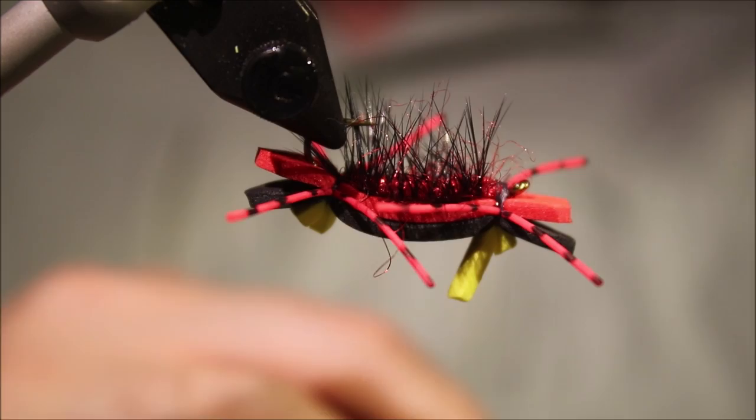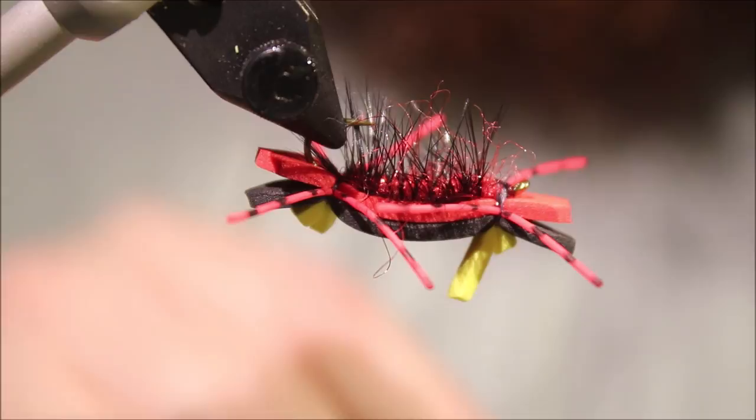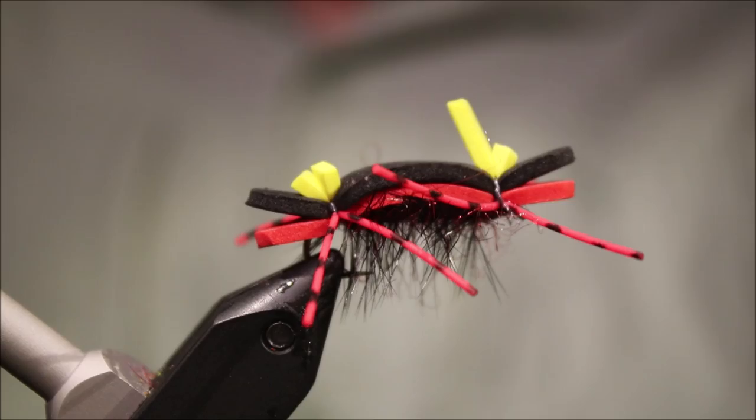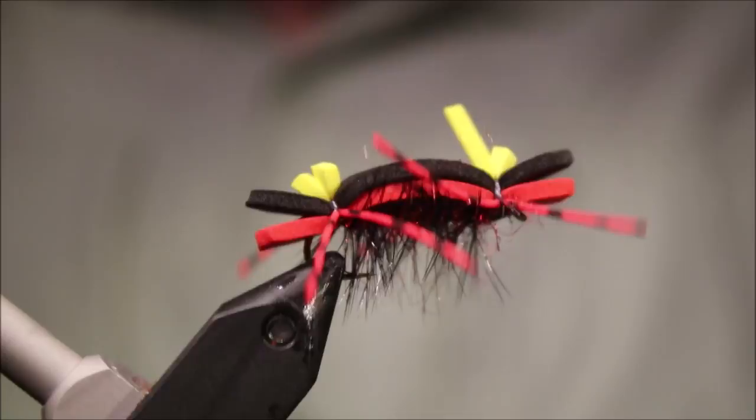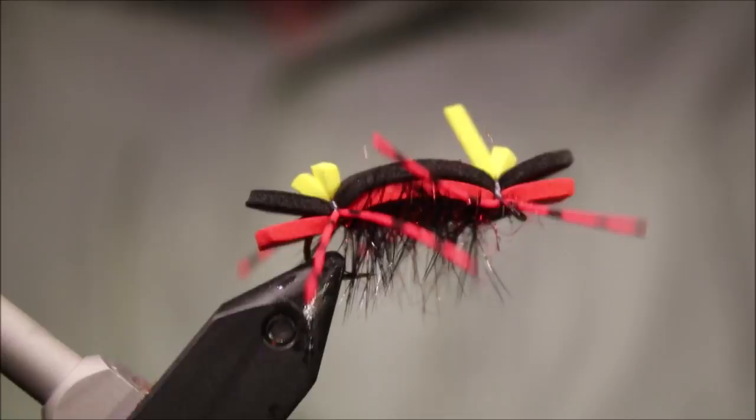Well worth tying some up. You know, it can be an ant, it can be a termite, it can be a hopper, cicada, whatever. Just a big nasty bug. Tie them any color you like, sizes four to ten. Great for the summer. So I hope that was useful. I hope you enjoyed it. If you did, please remember to give me a thumbs up below and subscribe to the channel. Tight lines guys, bye.